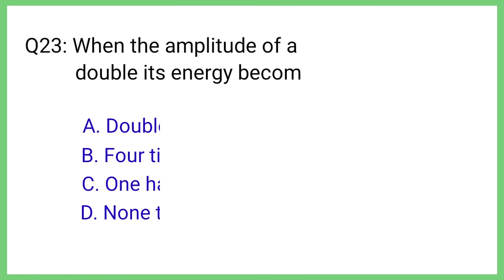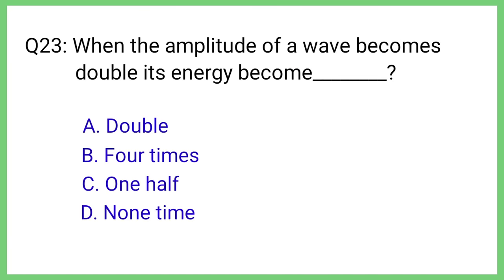Question No. 23. When the amplitude of a wave becomes double, its energy becomes. The correct answer is Option B. Four times.